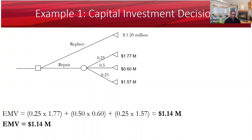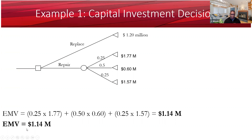EMV, as you can see here, is the weighted average of the possible outcomes multiplied by their probabilities. As you can see on my screen, EMV is not the product of one possible outcome by each probability — it is the sum of the products. The weight here is the probability of each possible outcome. So EMV is 1.14 million.